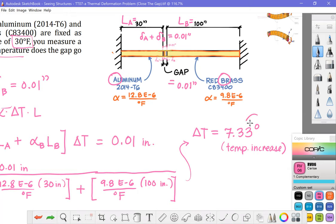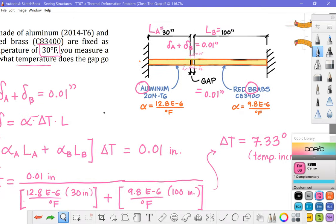They won't start to develop a compressive force pushing against each other unless we were to increase the temperature further and we'll do that in a future unit. But for right now the amount of temperature increase that causes them to just come together is 7.33 degrees.